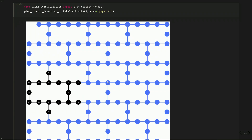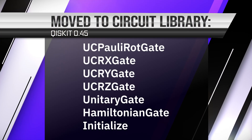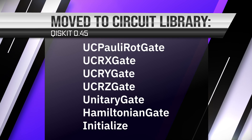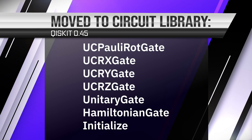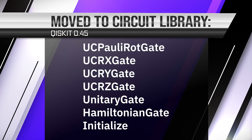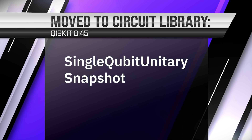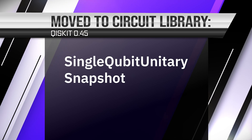On to deprecations, starting with Qiskit Extensions. The following classes from Qiskit Extensions have migrated to qiskit.circuit.library: UCPolyRotGate, UCRXGate, UCRYGate, UCRZGate, UnitaryGate, HamiltonianGate, and Initialize. The classes SingleQubitUnitary and Snapshot have been deprecated overall due to similar existing functionality elsewhere.